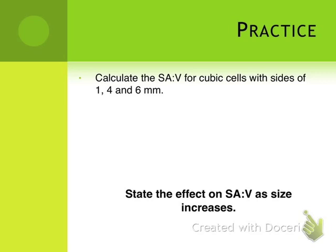We'll discuss the importance of the squared and cubed values in just a moment, but first I'd like you to do some practice calculations. Calculate the surface area to volume ratio for three cubic cells with sides of one, four, and six millimeters. Please pause the video and do those sample calculations, and be sure to simplify.